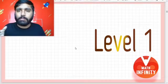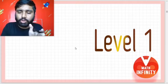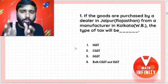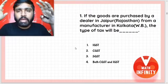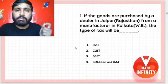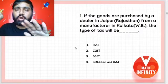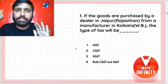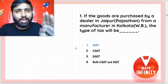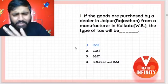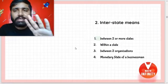Let's start. If you have any questions, pause on a particular question. Question number one: if the goods are purchased by a dealer in Jaipur from the manufacturer in Kolkata, the type of tax will be — let's think about this.